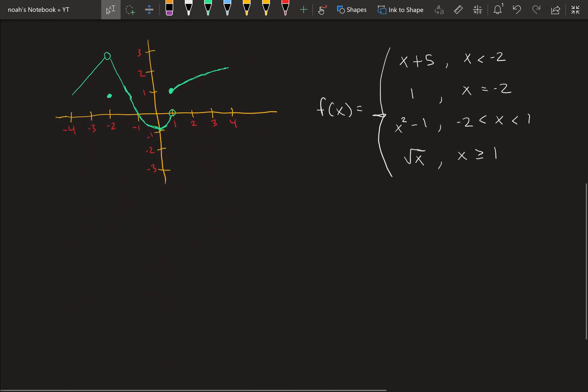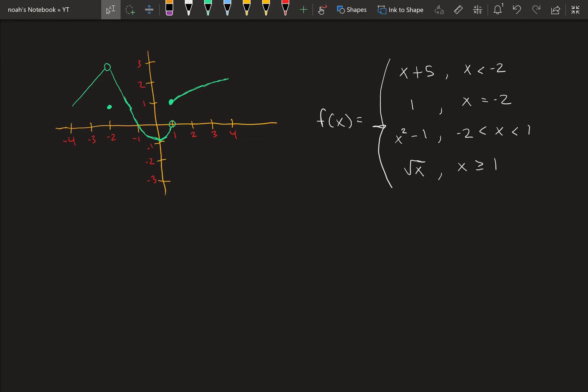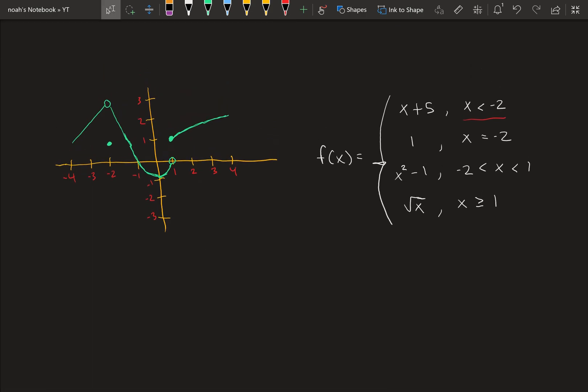So we have this piecewise function right here. For different ranges of x, we have different functions. So the open-ended ones, such as x less than minus 2, we would use a hollow or empty circle right here. That's how we would represent it, the end point. And then if it's closed, so it contains an equal, we would put a closed circle, like right here.